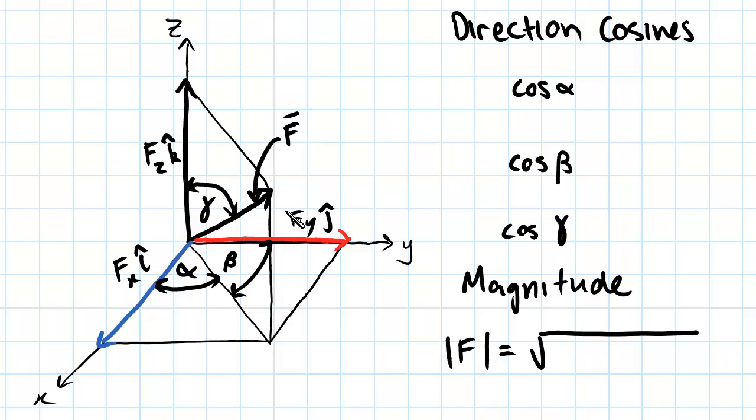And if we want to work out the magnitude of F, we simply take the components, take the squares of each of the components, and then the square root.